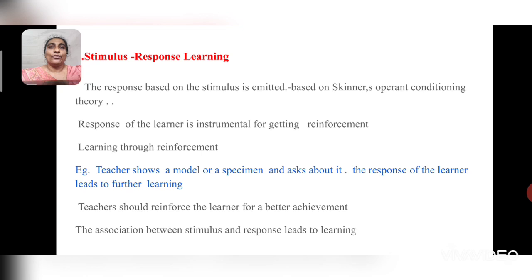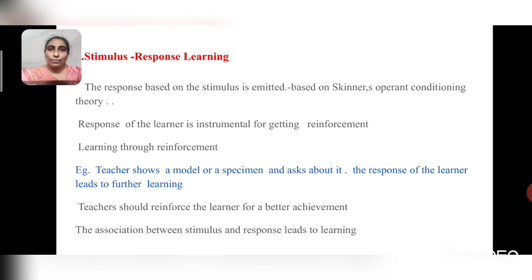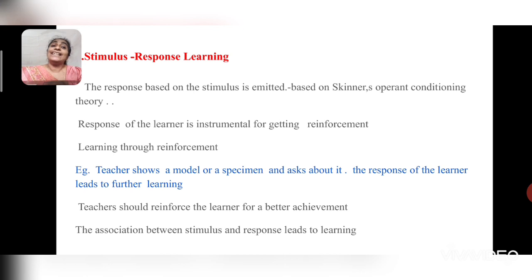The next level is stimulus response learning. Here, the response based on the stimulus is emitted — related to Skinner's operant conditioning theory. In signal learning, it is an involuntary action based on classical conditioning, but here the response comes voluntarily and is instrumental to getting reinforcement. Learning takes place through this reinforcement behavior.